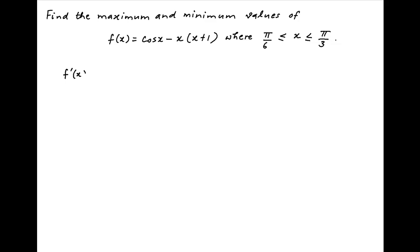In order to determine the maximum and minimum values, we take the derivative of f(x) which is equal to -sin x - 2x - 1, which can be written as -(sin x + 2x + 1).